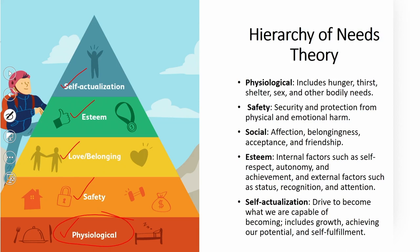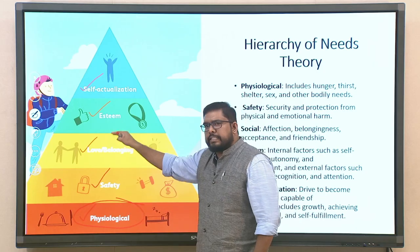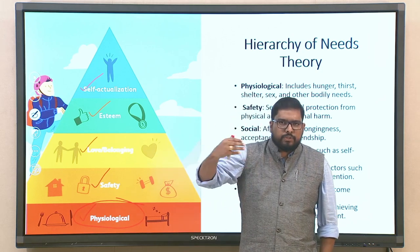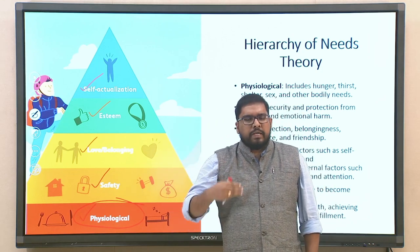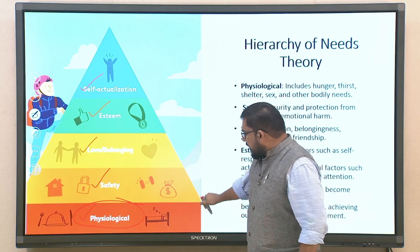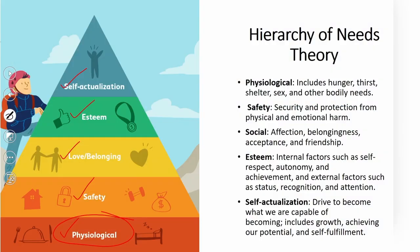Once one segment of needs is satisfied, individuals move to the next phase — that is Maslow's contention. The physiological needs cover hunger, thirst, and all associated physiological needs. Once satisfied, it goes to the safety aspect, which covers safety and protection from both physical and emotional harm.